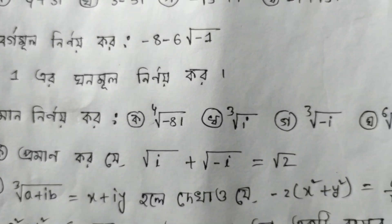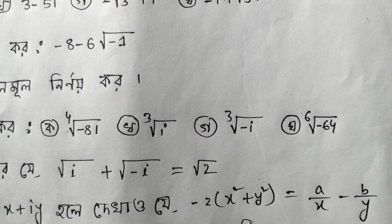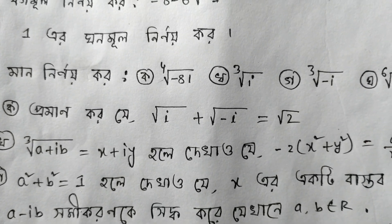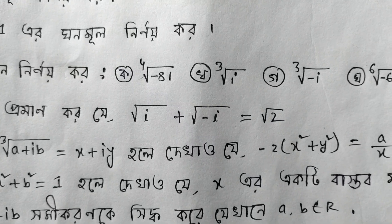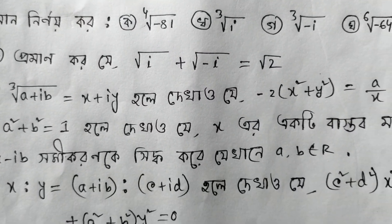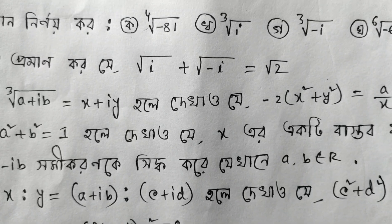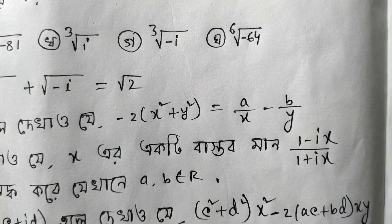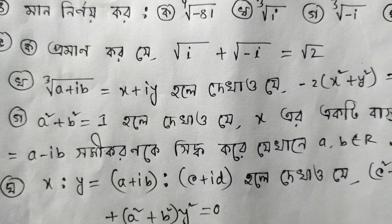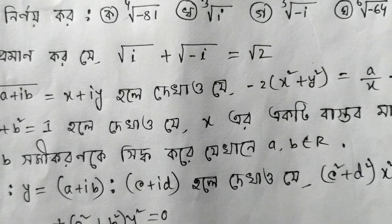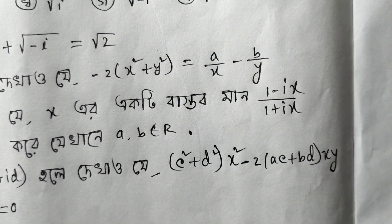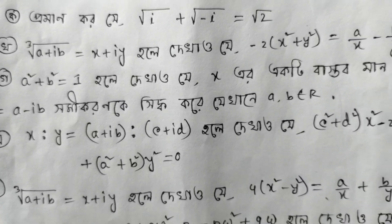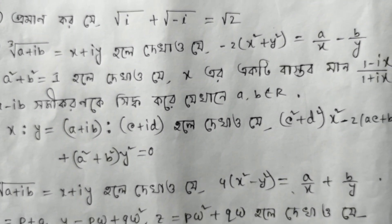Number 4 problem: a² + b² = 1. Given that x = (1 + i·x) / (1 - i·x), it would follow that a - ib, where a and b are real numbers — showing the relationship between the complex expression and real components.